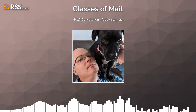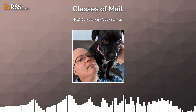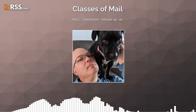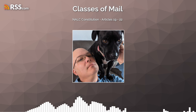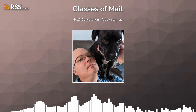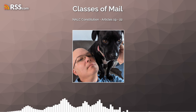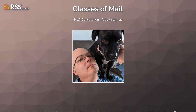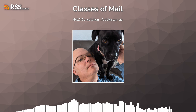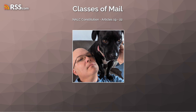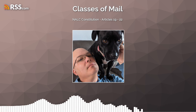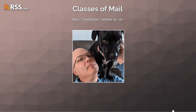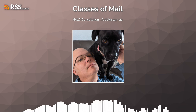Hey everybody, welcome to another episode of Classes of Mail. My name is Alan Giegax, and today we are going to read more from the NALC Constitution. We are going to finish the main body of the Constitution, which will be Articles 19 through 22, and then the next episode will cover subordinate and federal branches — your local branches. But first we have to get through this, so let's get to it.